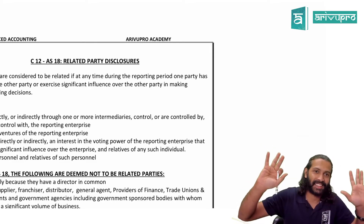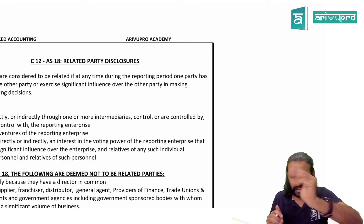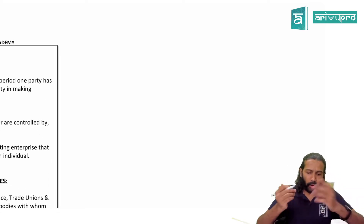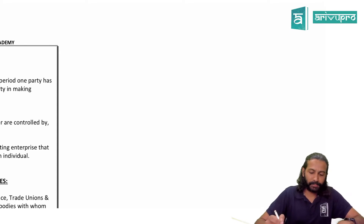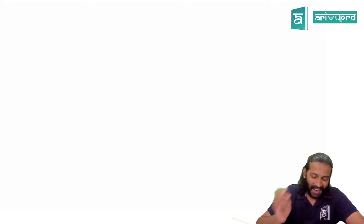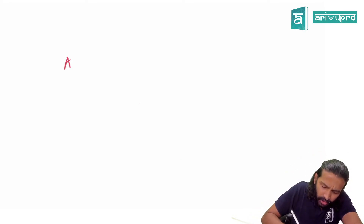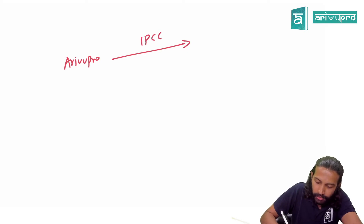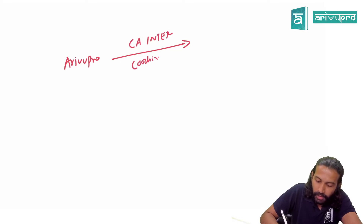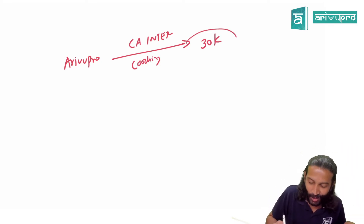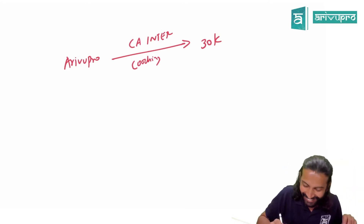Before we define related party, let's understand why the standard was first introduced. Let's take our own academic example. Arrivo Pro Academy provides CA Inter coaching. Let's say we charge about 30,000 as the fees — that's just an assumption.